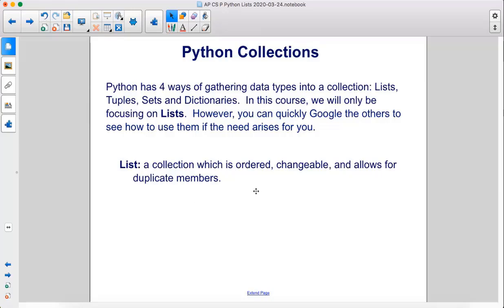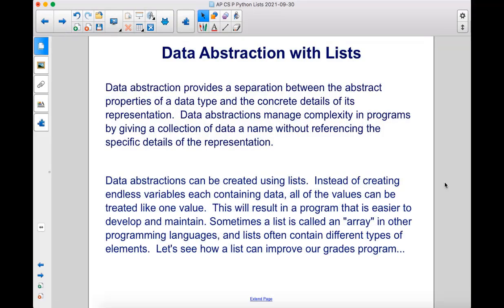A list is a collection which is ordered, changeable, and allows for duplicate members. Data abstraction provides a separation between the abstract properties of a data type and the concrete details of its representation. Data abstractions manage complexity in programs by giving a collection of data a name without referencing the specific details of the representation. Data abstractions can be created using lists.